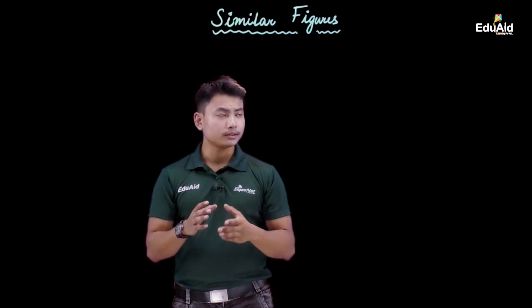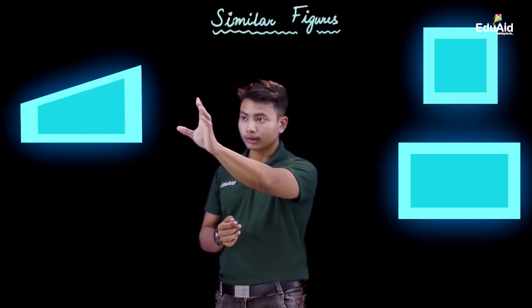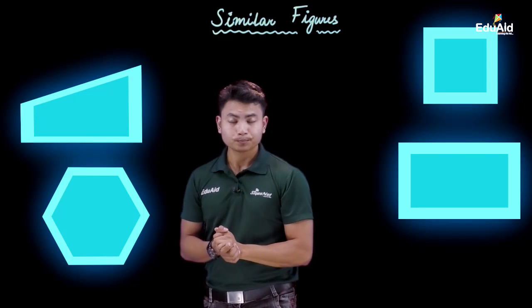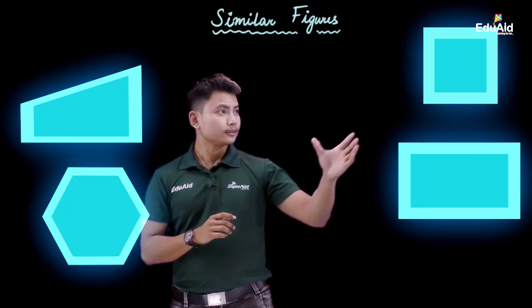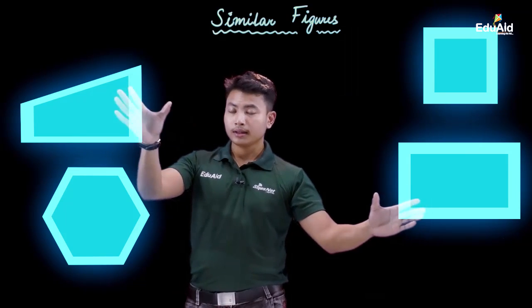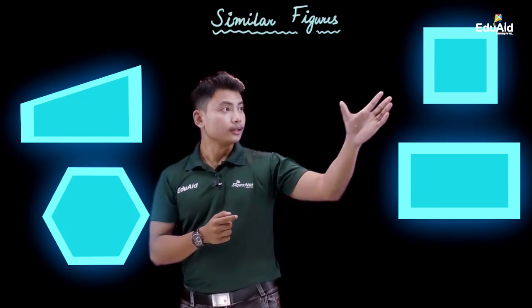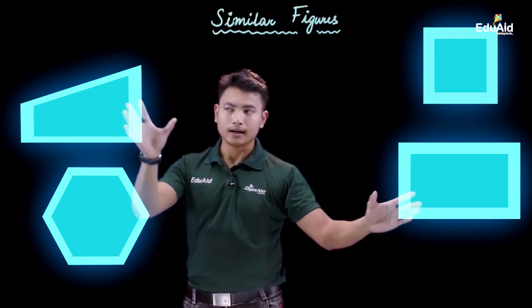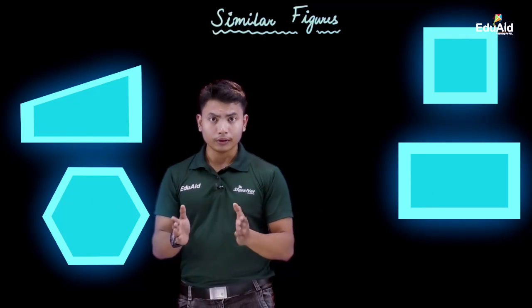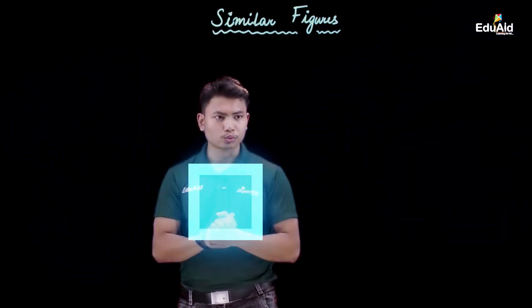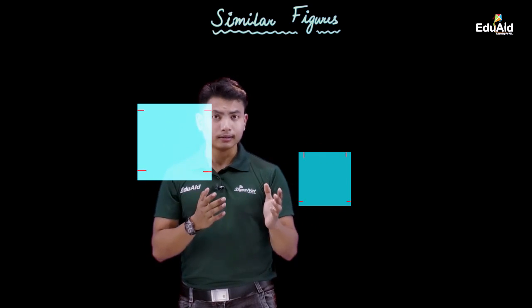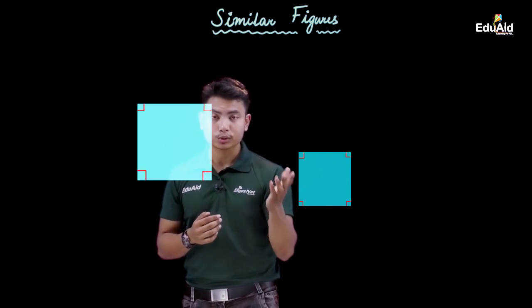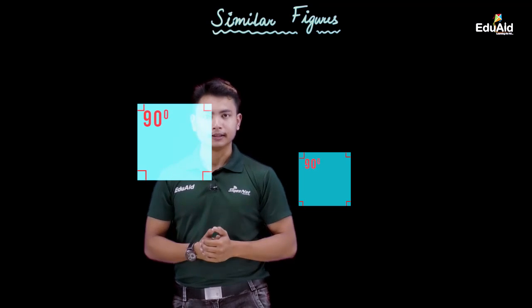Similarly, if we consider other shapes such as squares, rectangles, quadrilaterals, and polygons, we can see that they look similar and the angles in each pair of similar figures are the same. If we consider two squares of different sizes, we can see that the angles made by the sides in both squares are the same — that is, 90 degrees.